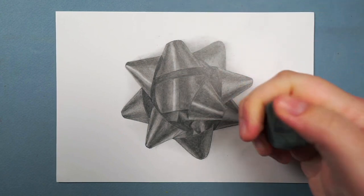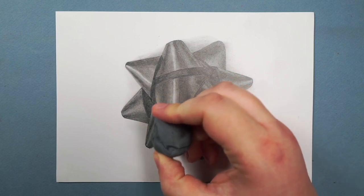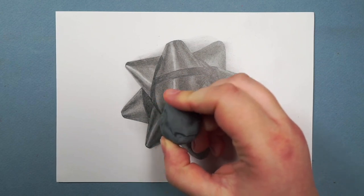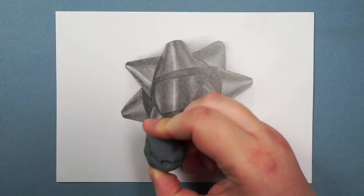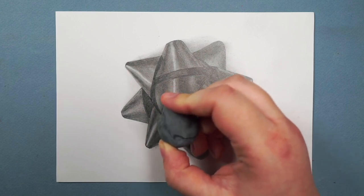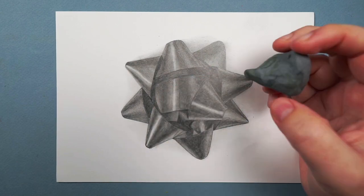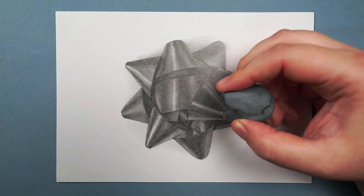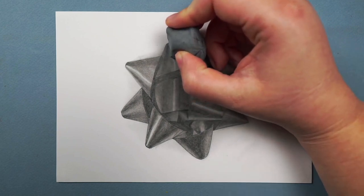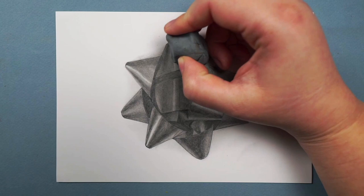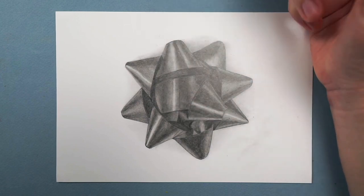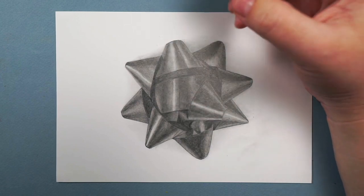I can start off by adding in those firmer lines, and then once I'm happy that I've got all of these sharper light patches in, there are also a few other areas that I just want to lighten up a little bit, and I can just use my eraser a little bit differently. I can just lightly dab it on the paper to just lift a little bit of the graphite rather than going in a back-and-forth motion to add a line.